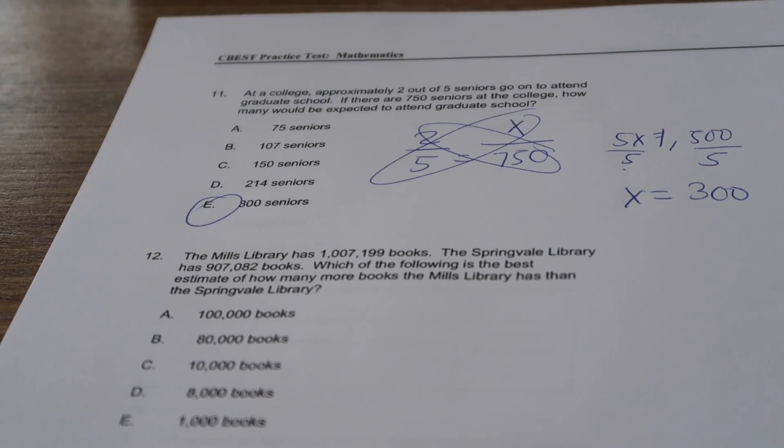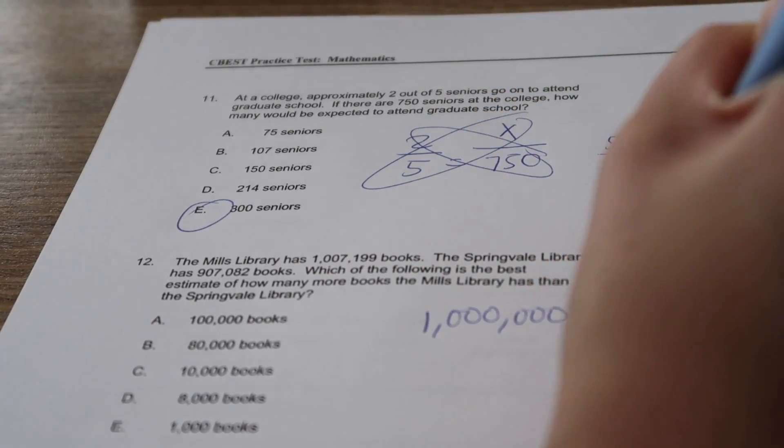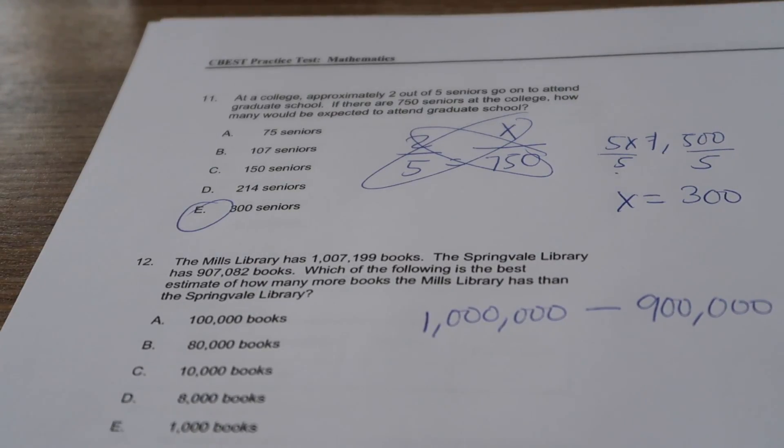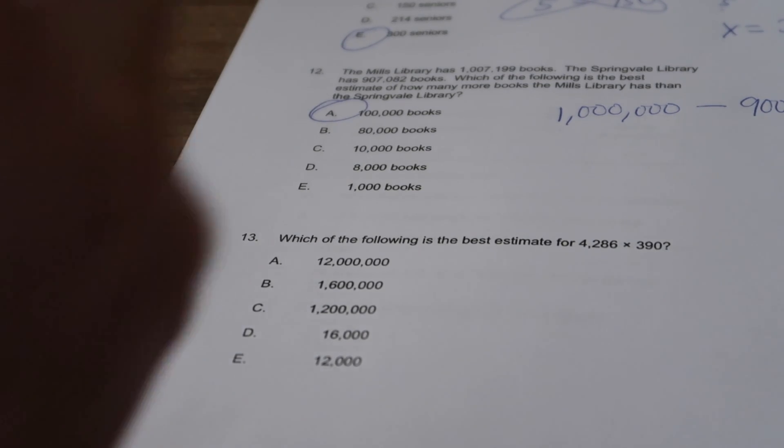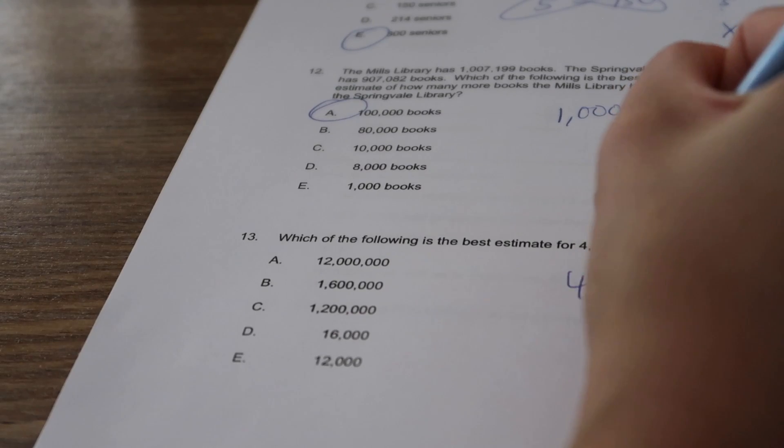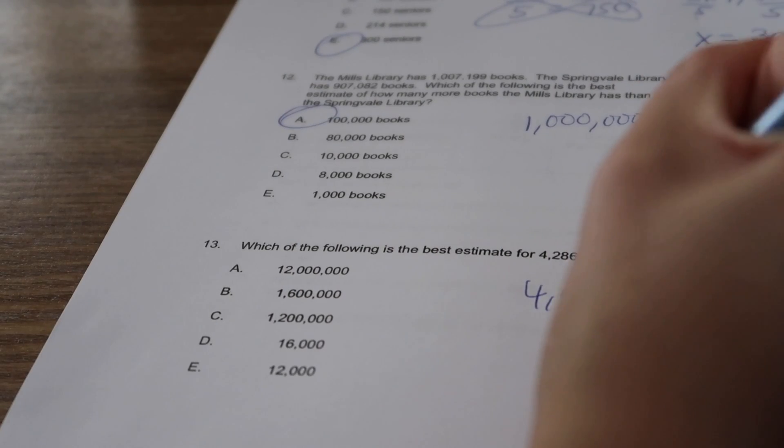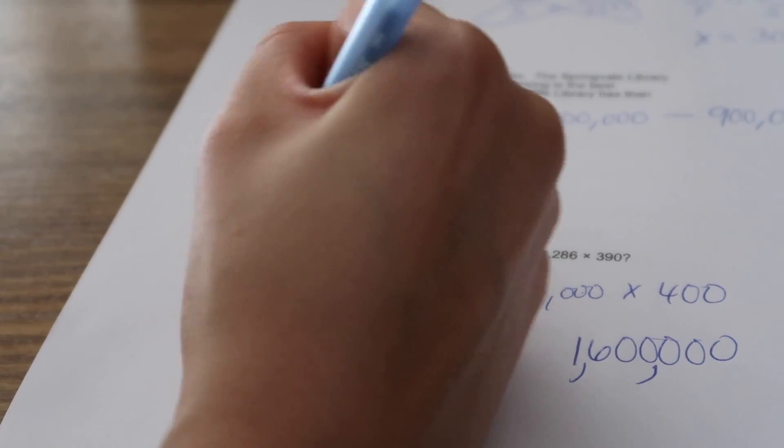Which of the following is the best estimate of how many more books the Mills library has than the Springville library? I'm going to do 1,000,000, I just rounded, minus 900,000, and I get 100,000. So A. Which of the following is the best estimate for 4,286 times 390? I'm going to round this down to 4,000, and I'm going to round up by 400. 4 times 4 is 16, and then you just add one, two, three, four, five zeros: 1,600,000 feet.